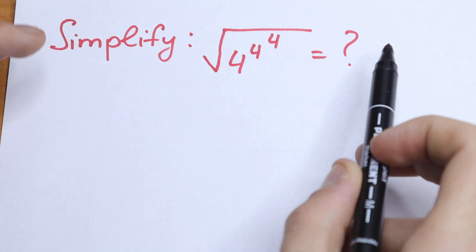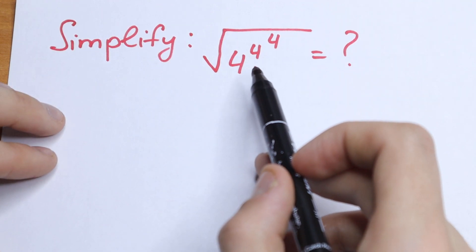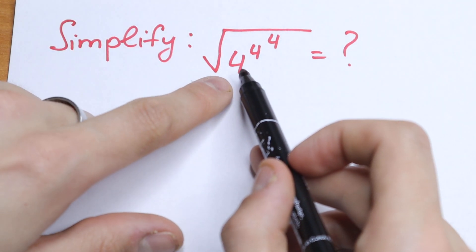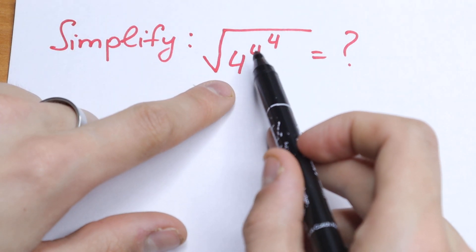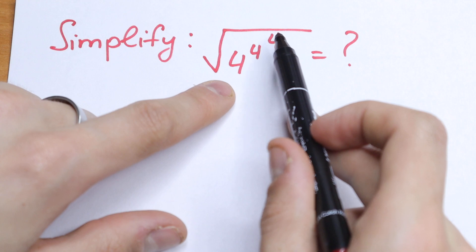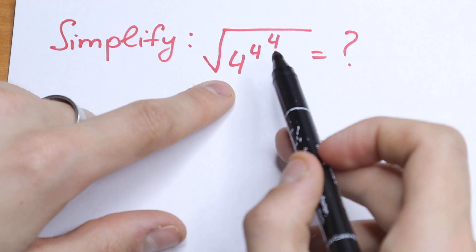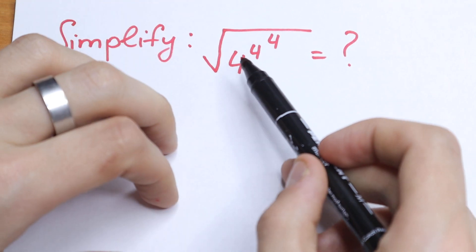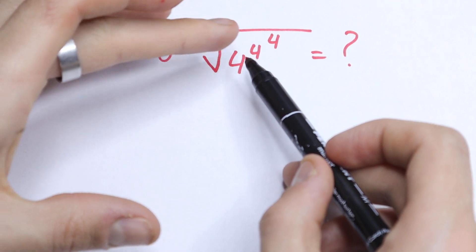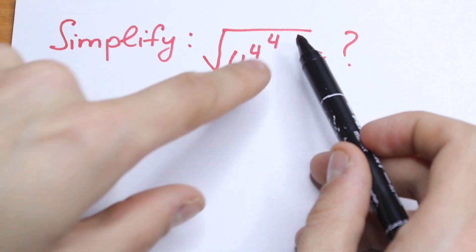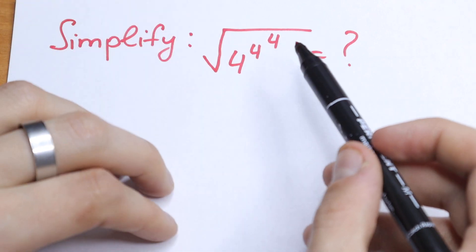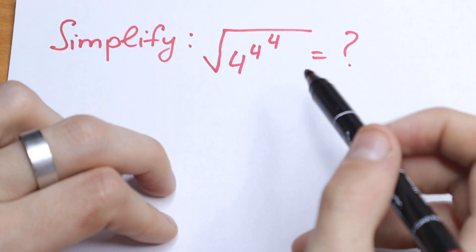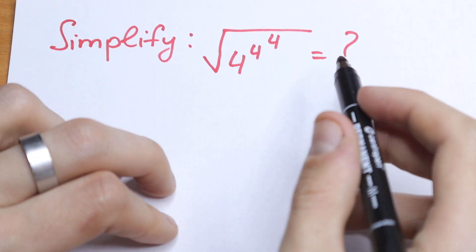On the first side the answer seems obvious, because we can easily say that the answer will be 4 to the power 2 to the power 2, or 2 to the power 2 to the power 2, because we're taking a square root. However, 4 to the power 4 to the power 2 is also not the correct answer, so none of these answers are correct.